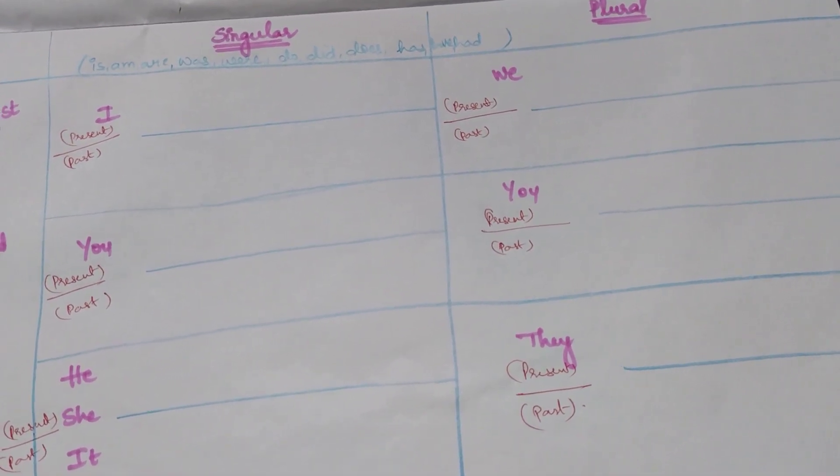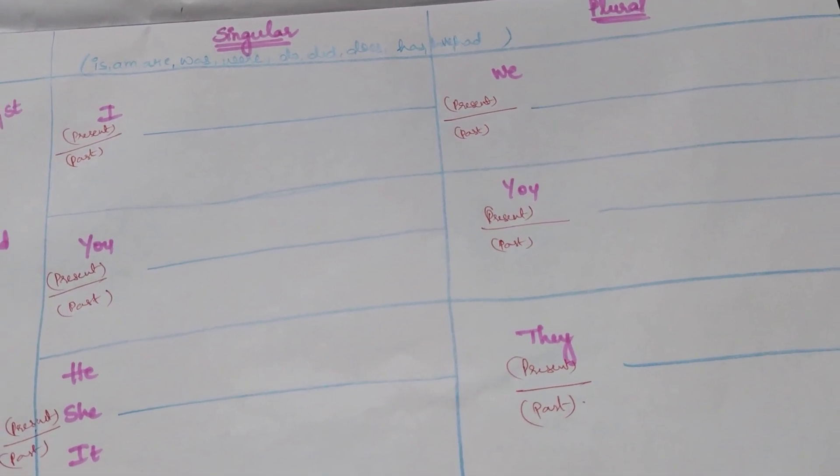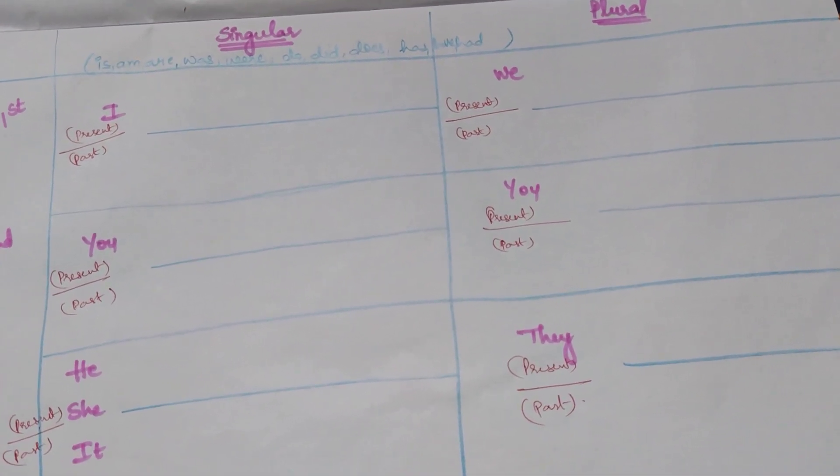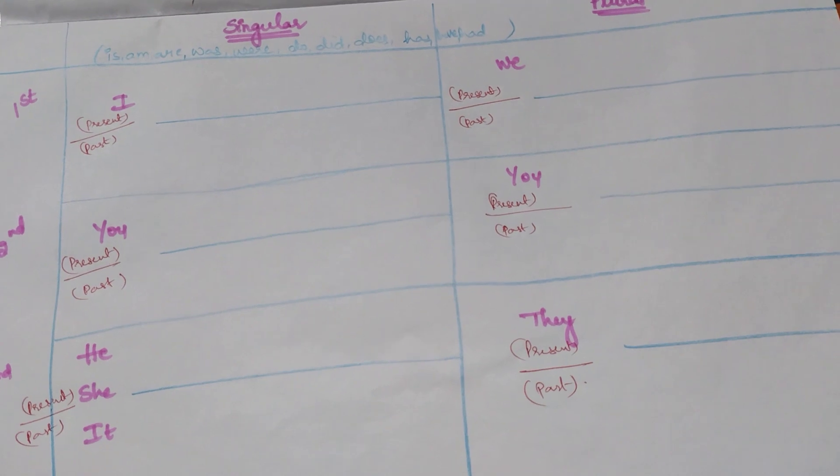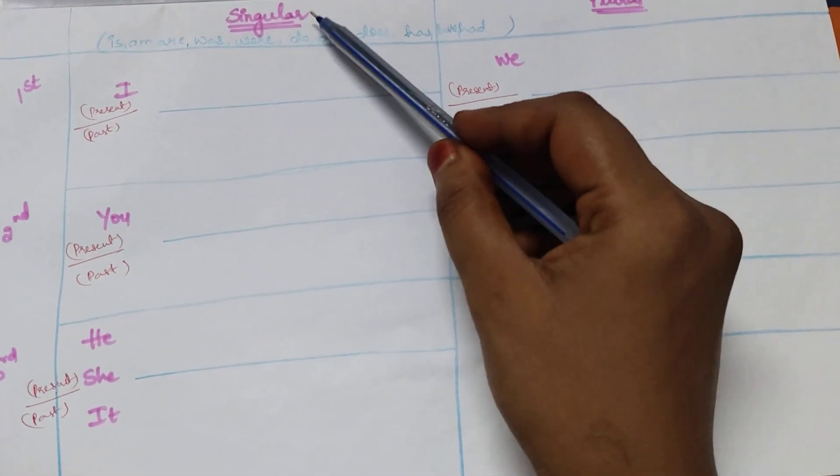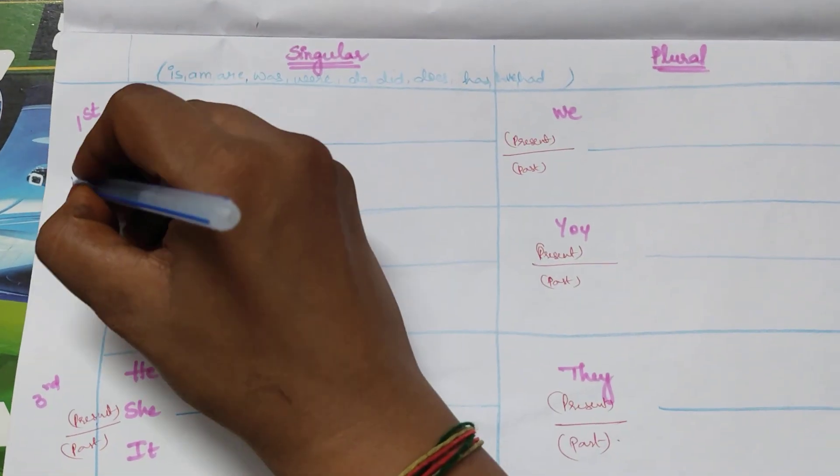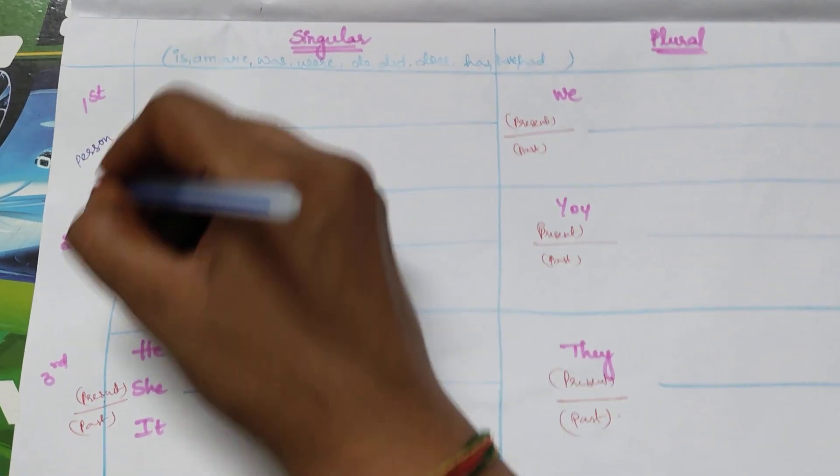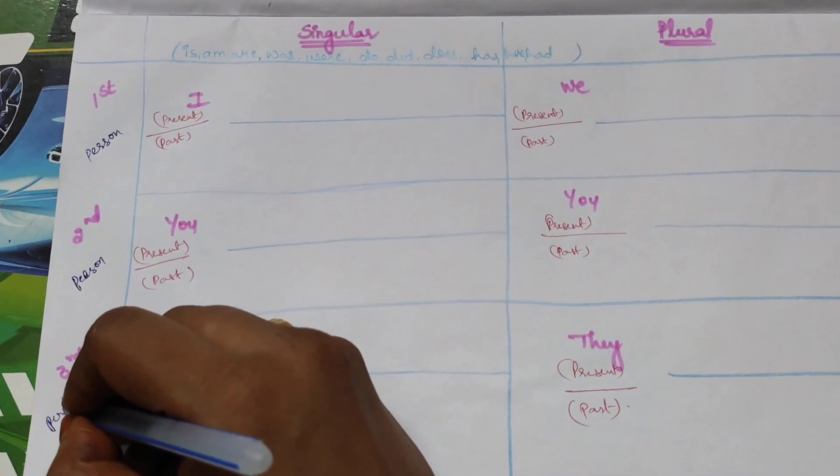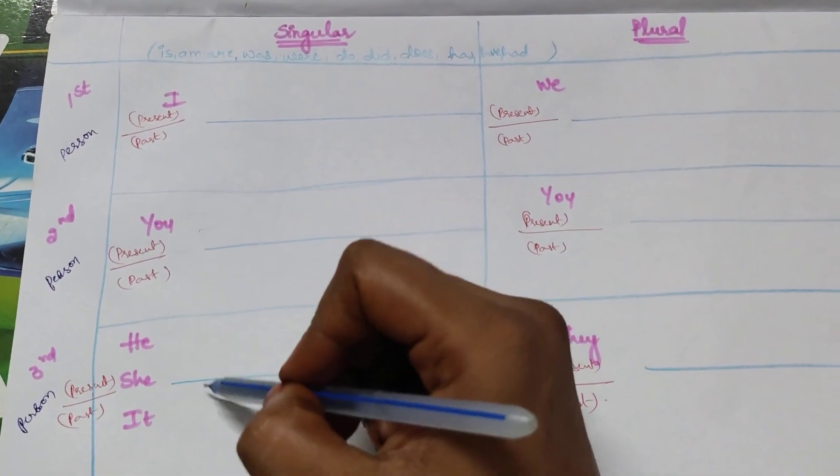And first thing we need to do is we should not fear about anything. As we are good learners, we can learn anything. So with that positive mind, let us start. Now, see I have divided singular, plural, first person, second person, third person.